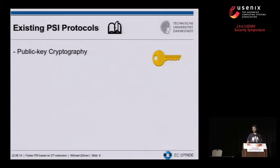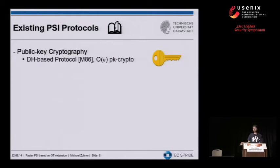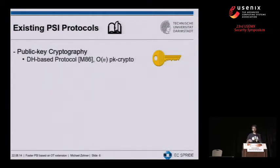Let's review what has happened in this area. The first protocols started using public key cryptography. The first one actually dates back as far as 1986, which we found by coincidence — it was mentioned in an appendix somewhere, saying that if you don't have a trusted third party, you might follow this protocol. It was outlined pretty sketchily, and it requires a linear number of public key operations in the number of elements.